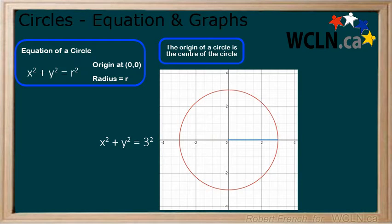The following example is a circle centred at (0,0) with a radius of 3. What if, though, we don't want a circle centred at (0,0)? Let's take a look at that next.